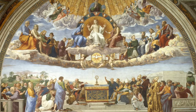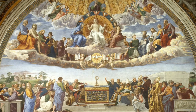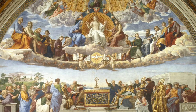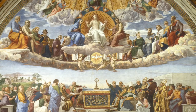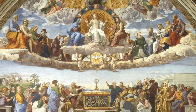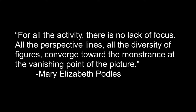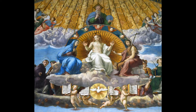Now back to the Disputation. Raphael provided an image that forces the viewer to realize the linear importance of God the Father, Jesus, and the Holy Host. The most noticeable aspect of the Disputation would be the composition and symmetry. Mary Elizabeth Pottles wrote an article for Touchstone Archives: for all the activity, there is no lack of focus — all of the perspective lines and diversity of figures converge toward the monstrance at the vanishing point of the picture. The Trinity — God, Jesus, and the Holy Spirit — and the altar are all lined vertically in the middle. God the Father would be seen as the superior while the altar is the least of the four. The composition and placement of all the elements gives it a sense of harmony, movement, and unity.